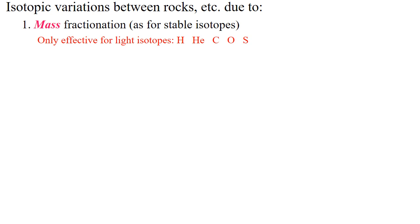There are three ways isotopic variation occurs in rocks. The first is by mass fractionation, as we discussed for stable isotopes. This occurs in all isotopic systems but is mostly used in stable isotopes and is really only effective for the lighter stable isotopes. The greater the mass difference, the greater the fractionation. This is really only useful at low temperatures, so mass fractionation does not occur at igneous and metamorphic temperatures.